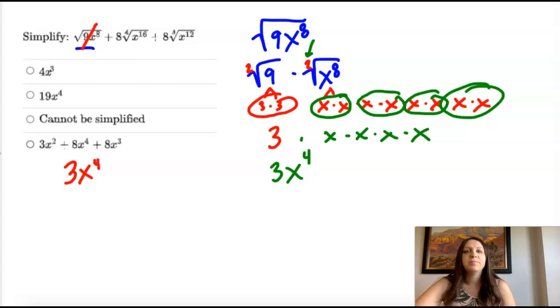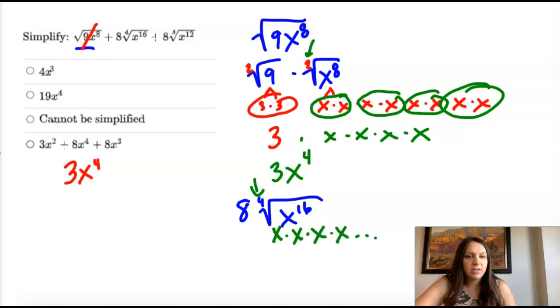So three x to the fourth. And then we're going to go the next one. So eight, index of four, x to the 16th. So I need groups of four this time. I'm not going to write out 16 x's. I could, but what I really need is groups of four. So I would have x to the fourth and then I would have four more and four more and four more until I had 16th. Four plus four plus four plus four.